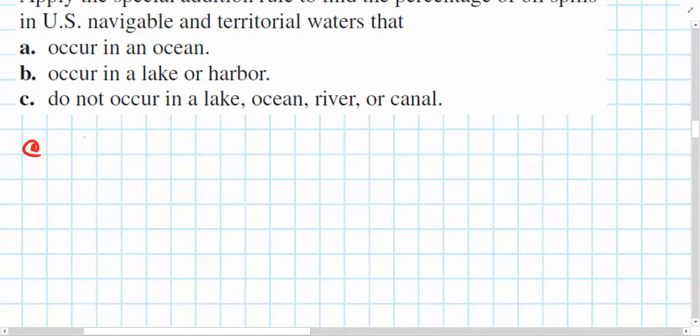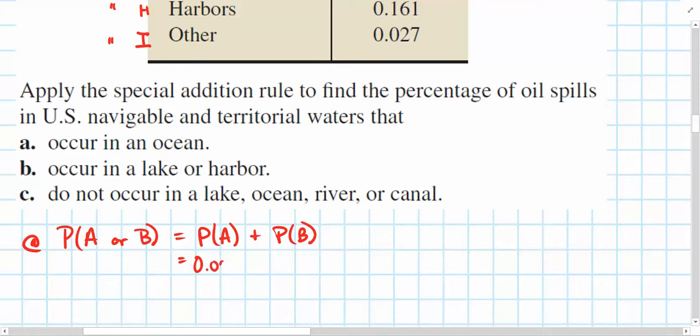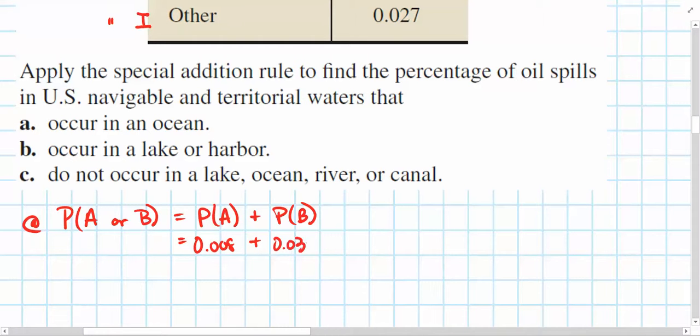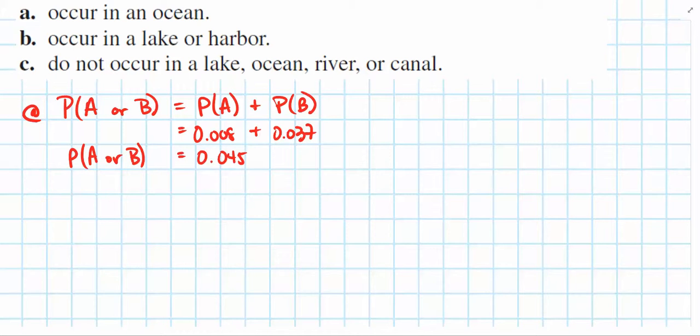So, using the special edition rule, it might look something like this. The probability that a spill occurs in either A or B, the Atlantic or Pacific Ocean, well, that's equal to the probability of A plus the probability of B, since these are mutually exclusive events. So, in this case, A is 0.008, and event B has a probability of 0.037, and we can add those two together, and that results in 0.045, probability of event A or B, also known as a spill in either the Atlantic or Pacific Ocean, is 0.045.